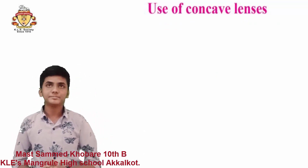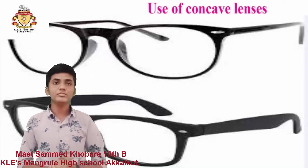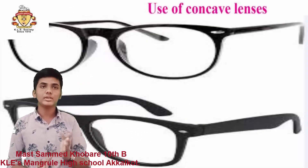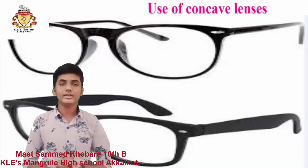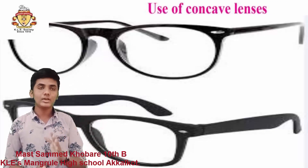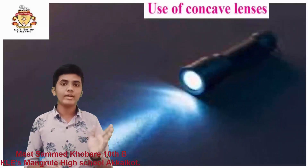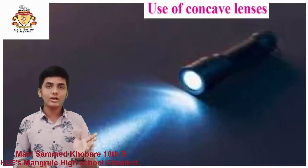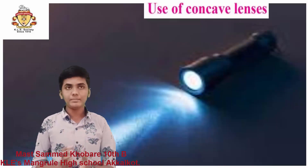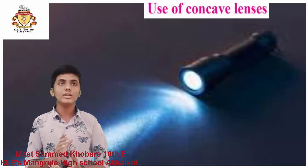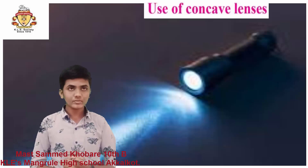Third, in spectacles, we can use a concave lens to correct the defect of vision known as nearsightedness. Fourth, in a torch, a concave lens is used to spread light over a wide area, produced by a small bulb inside the torch.